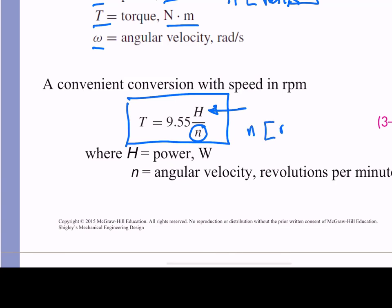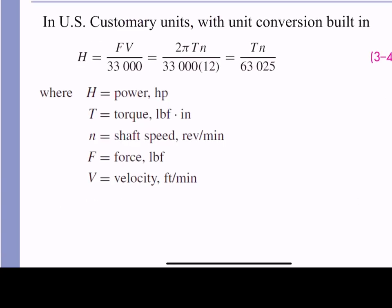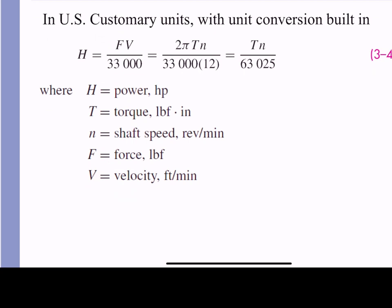If you're using English customary units, everything's a big pain. And so what we have to do is we convert horsepower to torque using this equation right here, where now the torque is given in inch pounds, and N is the shaft speed in RPM. If you use this equation, H is in horsepower.